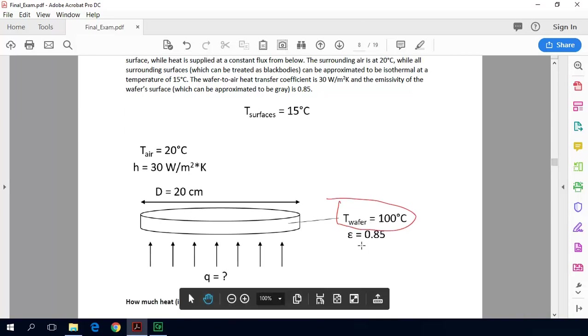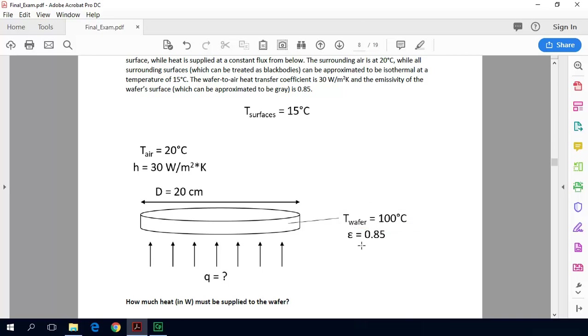So at steady state, all the heat coming into the wafer will be leaving by convection and radiation, a combination of those two. So if we're losing heat by convection and radiation, we need to quantify how much heat is lost by each of those.